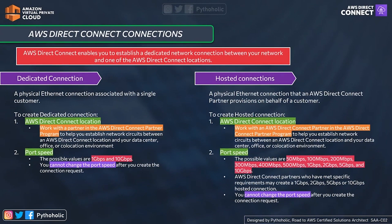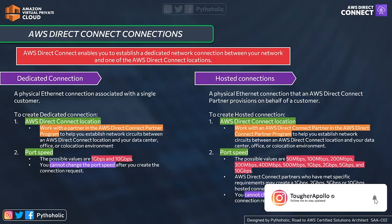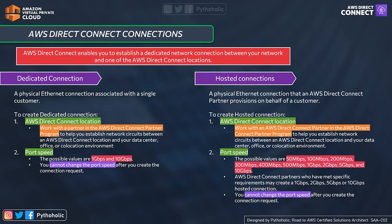AWS Direct Connect creates a dedicated connection between on-premise and the AWS Direct Connect locations. There are two types of connections: dedicated and hosted. With dedicated connections, you as a customer request the connection via the console or API and AWS creates the physical Ethernet connection for that single customer. With hosted connections, you contact a partner in the AWS Direct Connect Partner Program, who creates the physical Ethernet connection on your behalf.